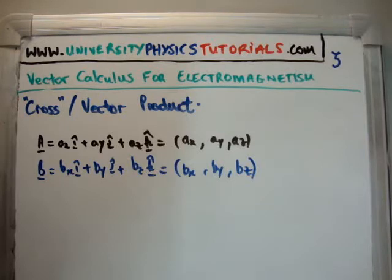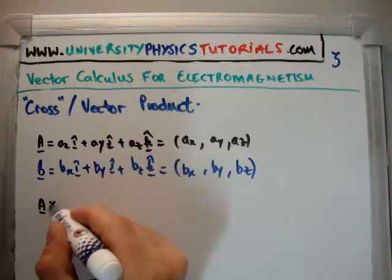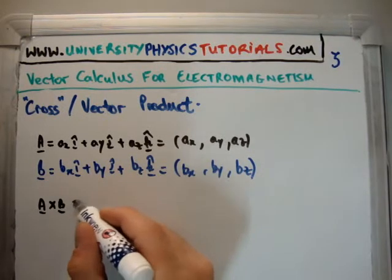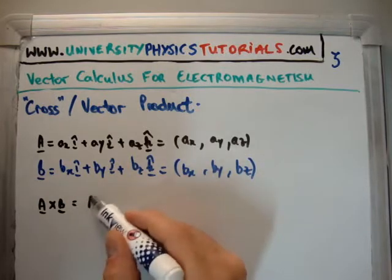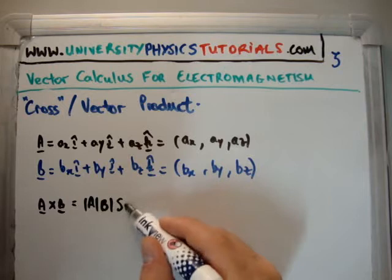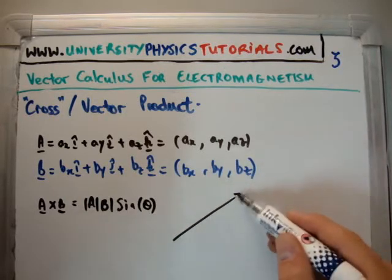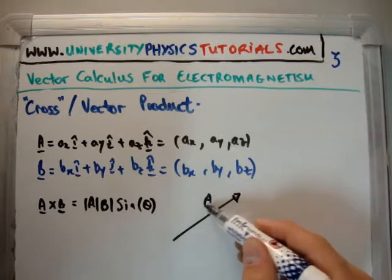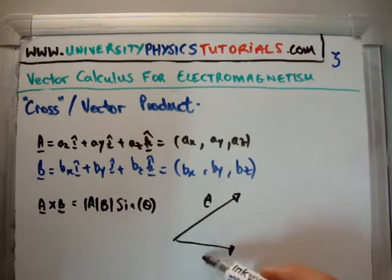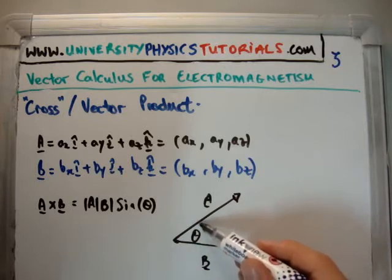So, just like with the dot product, I'm going to give you the answer. A cross B is written like that. Notice they're vectors. And it's going to be the magnitude of A multiplied by the magnitude of B multiplied by the sine of the angle in between. So, let's say this is the vector A. Let's say this is the vector B. Well, the angle between them here is theta.